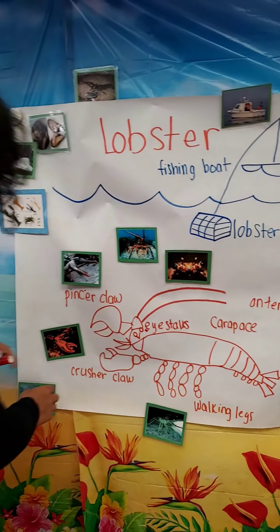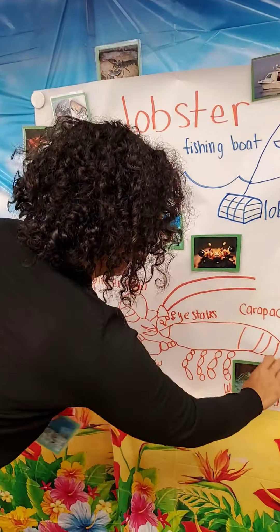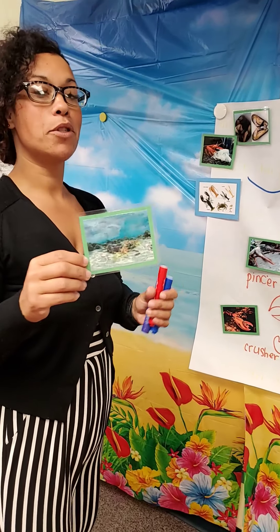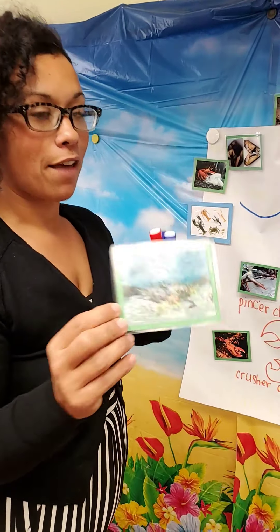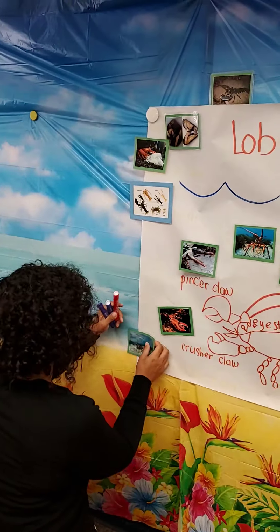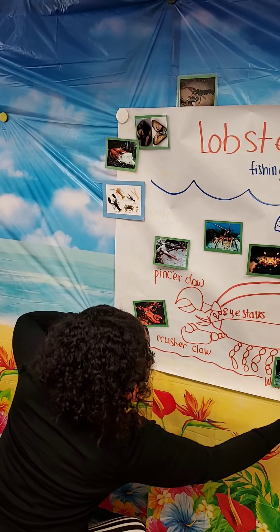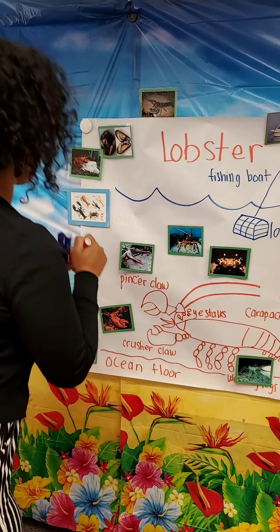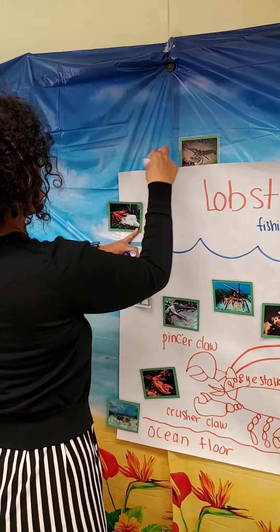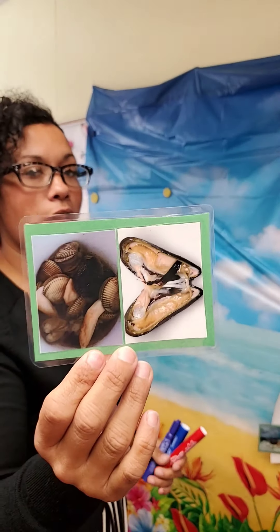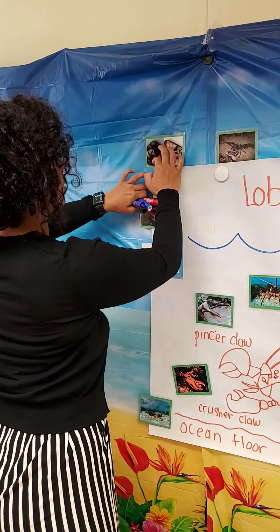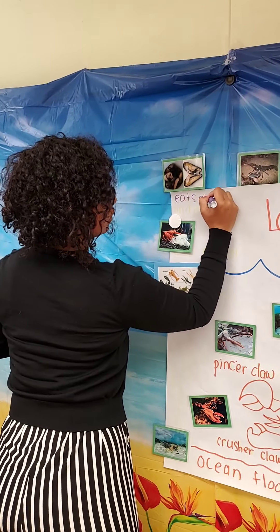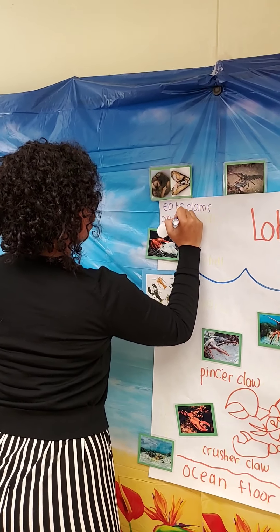Now we're going to learn where the lobster lives. The lobster lives in the ocean, on the ocean floor. They come walking along on the ocean floor. The lobsters eat clams and mussels that they can find on the ocean floor.